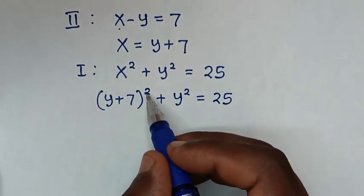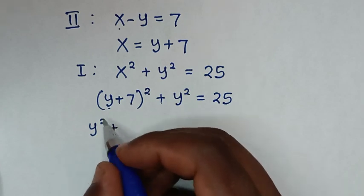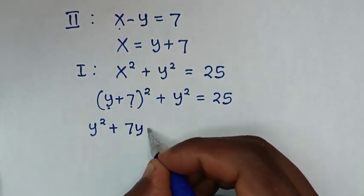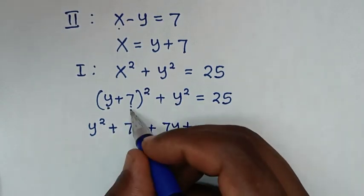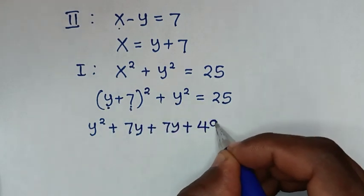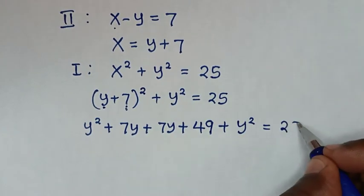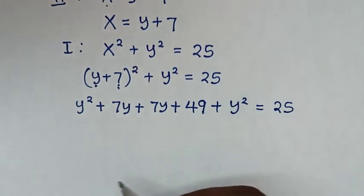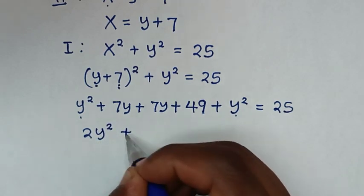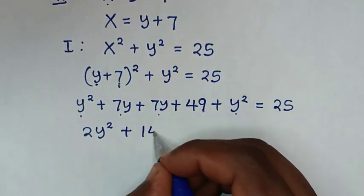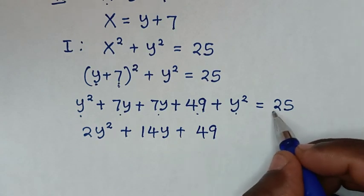We expand (y plus 7) squared: y times y is y squared, plus y times 7 is 7y, plus 7 times y is 7y, plus 7 times 7 is 49. Then plus y squared equals 25. Combining like terms: y squared plus y squared is 2y squared, plus 7y plus 7y is 14y, plus 49 equals 25.